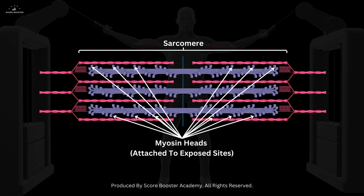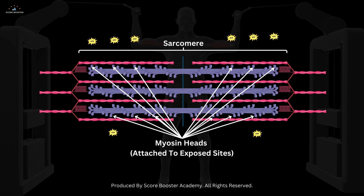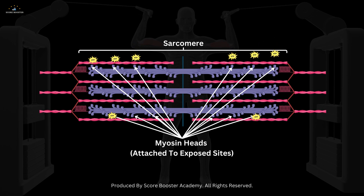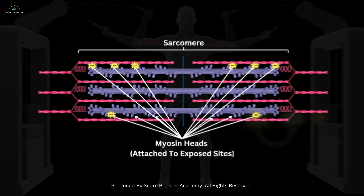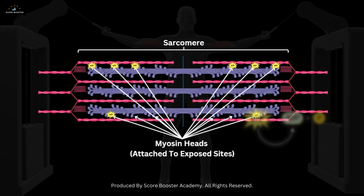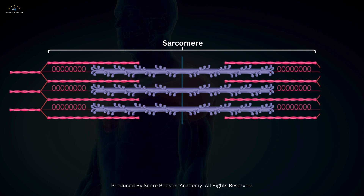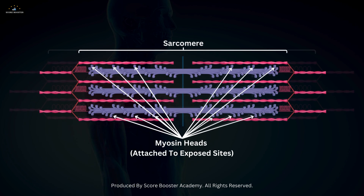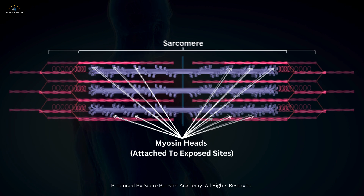After the power stroke, ATP binds to the myosin head, causing it to release the actin filament. The ATP is then hydrolyzed to ADP and inorganic phosphate, re-energizing the myosin head and preparing it for another cycle of binding and pulling.